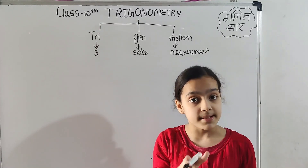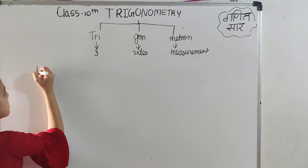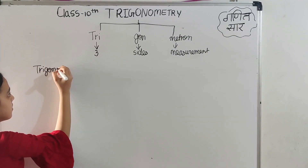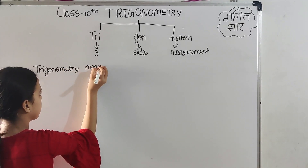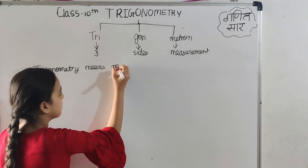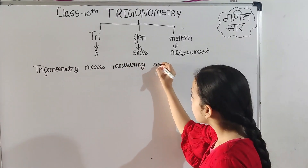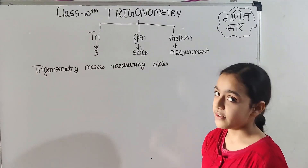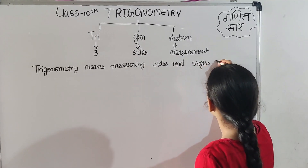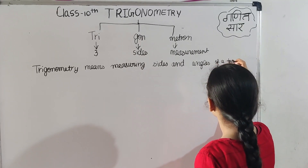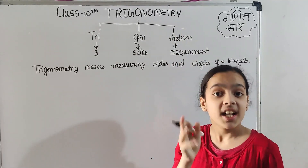So if anyone asks you what is the meaning of trigonometry, you have to say that trigonometry means measuring the sides and angles of a triangle. Let's write it: trigonometry means measuring sides and angles of a triangle.